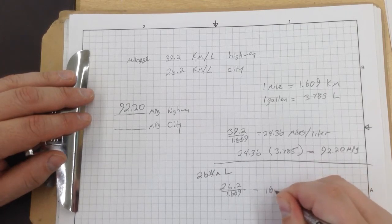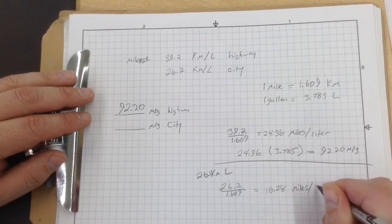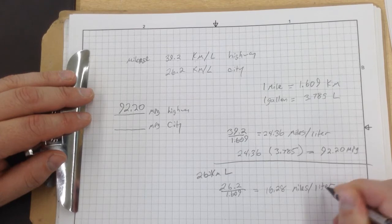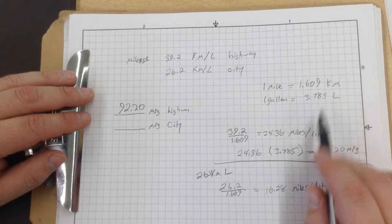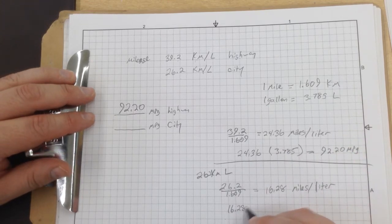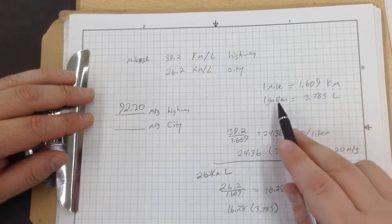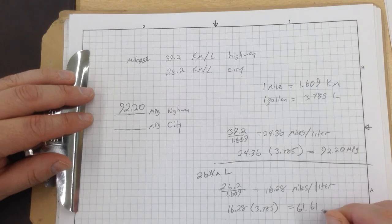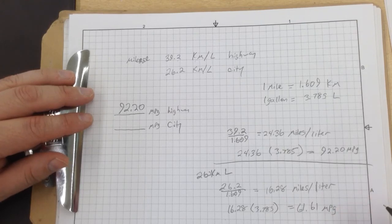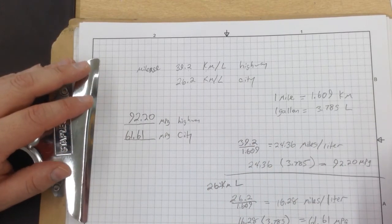We still have to convert liters into gallons. We take 16.2, which is miles per liter, and we multiply it times 3.785, which is the equivalency gallons to liter. That is going to give us 61.61 miles per gallon. So it's a pretty fuel efficient vehicle.